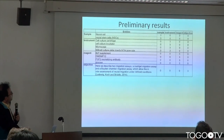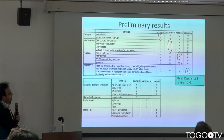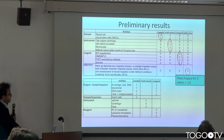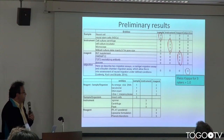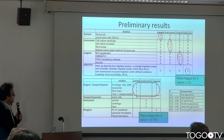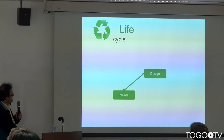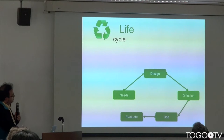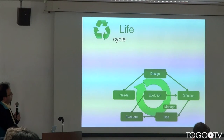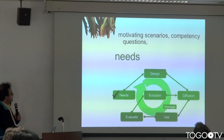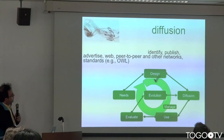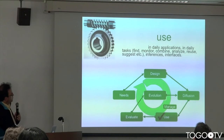We basically were calculating a coefficient of agreement so that we could know whether a given word is really sample, instrument, or region. When developing the ontology, you usually do some requirements, some design, some diffusion, use, and evaluation, and then you support the evolution and start managing. When you have the needs, the design, and the diffusion of the ontology, you start making use of that ontology.